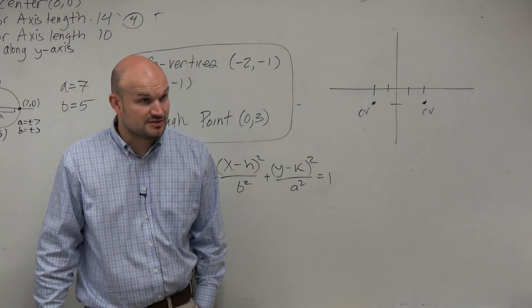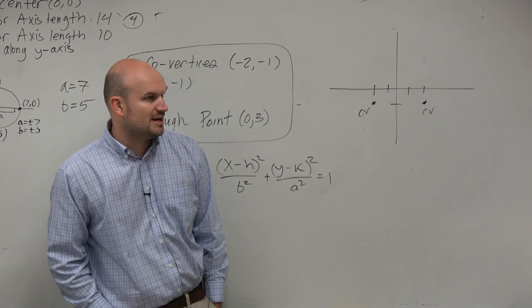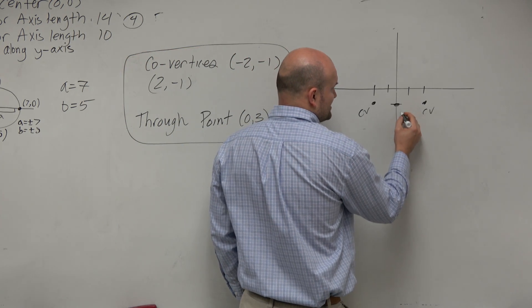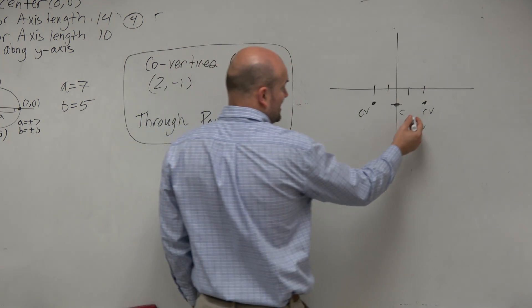Just from plotting two points, I was able to know the orientation of my ellipse. Based on these two points, I also know that the midpoint is going to be my center, which is at 0, negative 1. That's my h and my k.